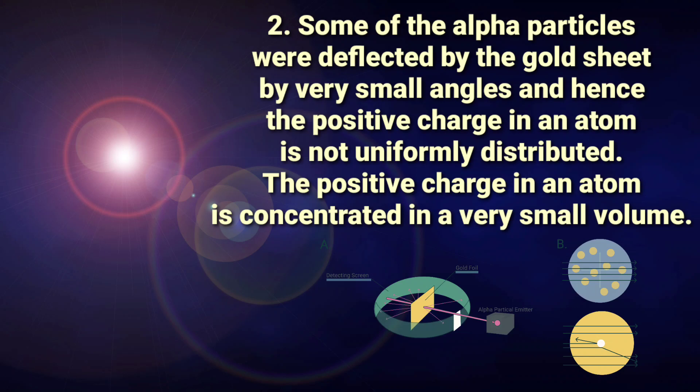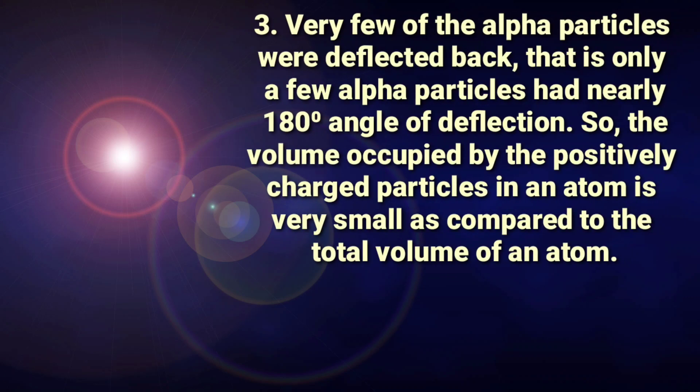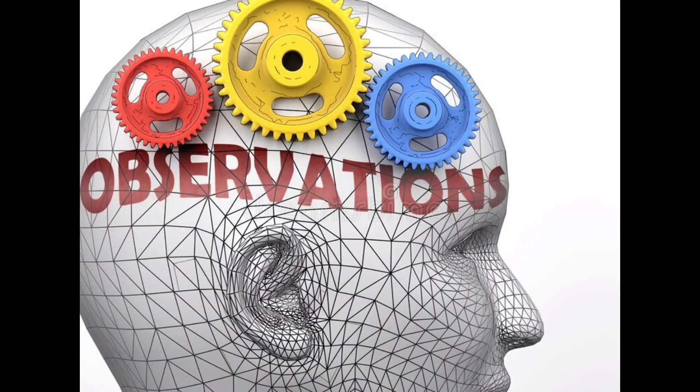Number three, very few of the alpha particles were deflected back, that is only a few alpha particles had nearly 180 degree angle of deflection. So the volume occupied by the positively charged particles in an atom is very small as compared to the total volume of an atom.